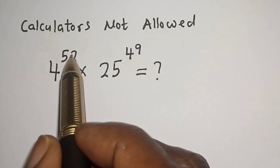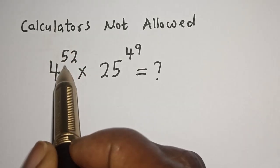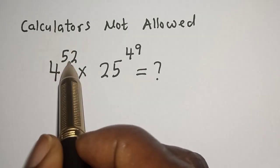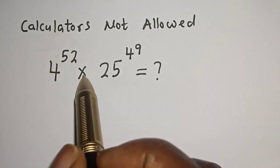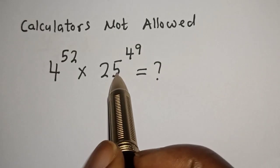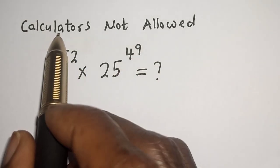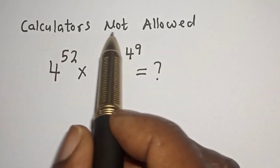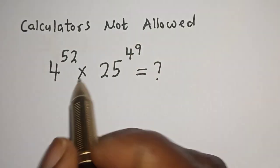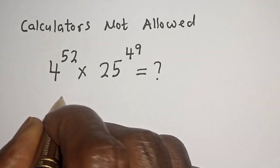Hello, welcome to Math Focus. How to simplify 4 raised to power 52 multiplied by 25 raised to power 49, but calculators are not allowed.